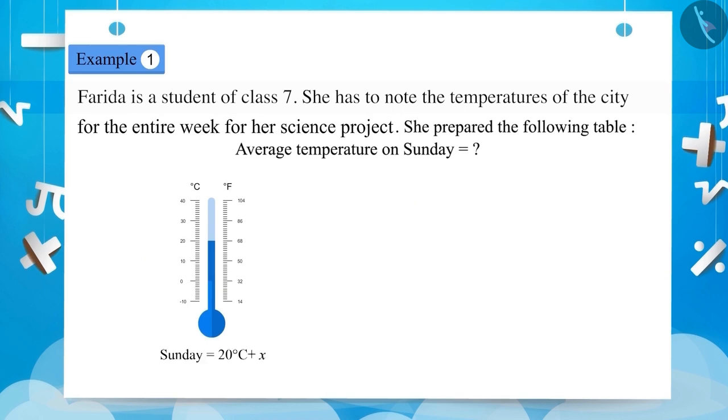For example, if we show the temperature on Sunday as 20 degrees Celsius plus X, then X can take different values such as 1, 2, 3, 4, etc. Therefore, the temperature on Sunday can be anything like 21 degrees Celsius, 22 degrees Celsius, 23 degrees Celsius, etc.